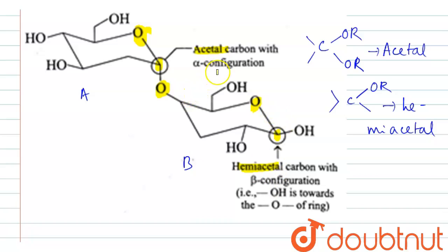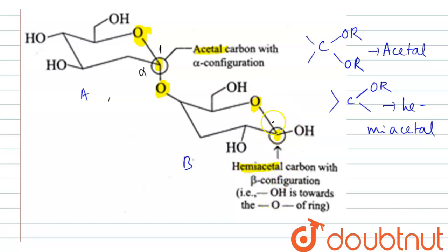Next, we determine which is alpha and which is beta configuration. In ring A, the first carbon has the OH group pointing downwards — not towards the oxygen of the ring — so this is alpha configuration. In ring B, the OH group is pointing upwards, towards the oxygen of the ring, so it is beta configuration. Ring A is acetal in alpha configuration, and ring B is hemiacetal in beta configuration.